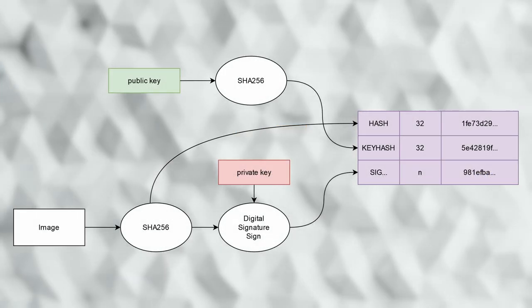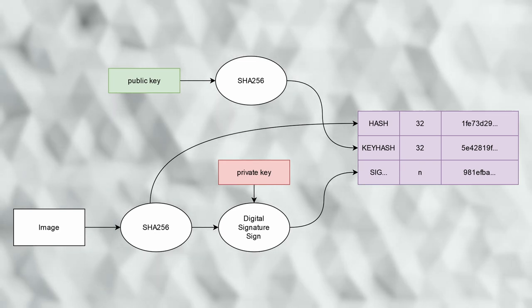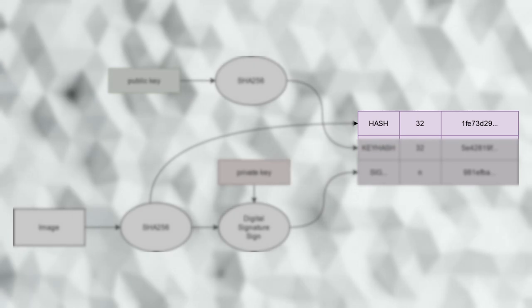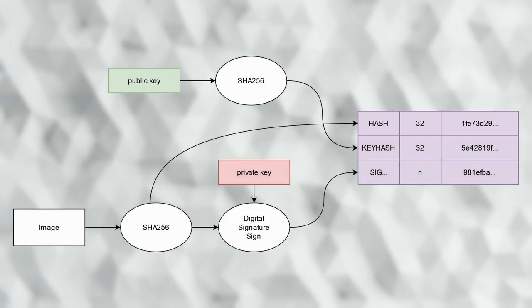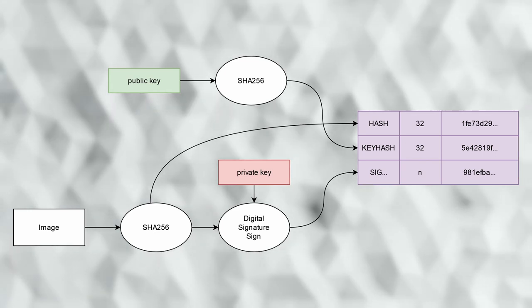If you recall, after the verified part of the image in the flash slot, we have a series of TLV entries. Earlier, we stored the output of the hash function. To sign this image, we give this hash along with the private key to the sign operation, and we'll store this signature in the TLV.